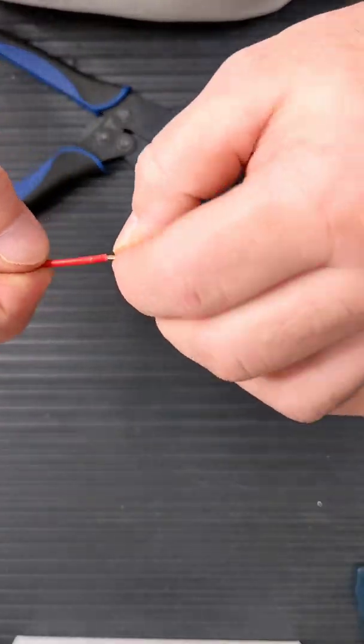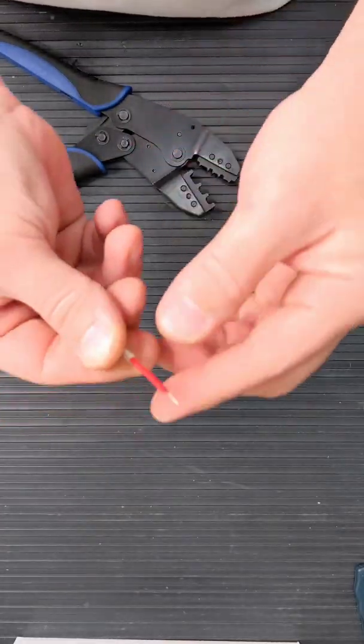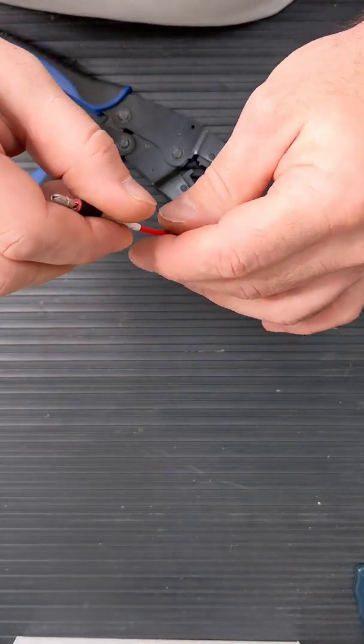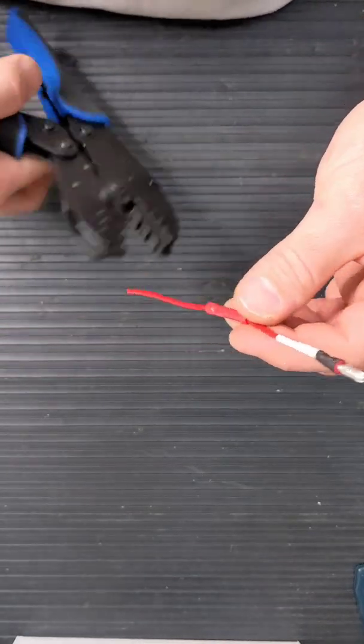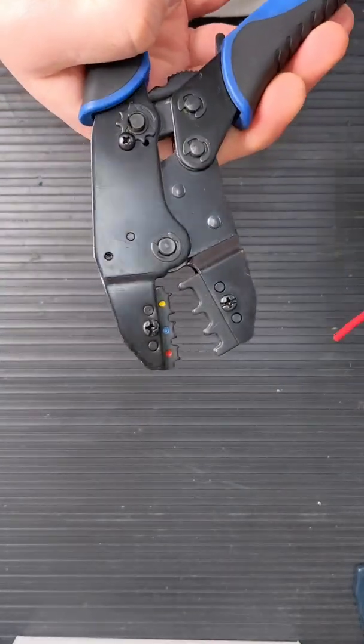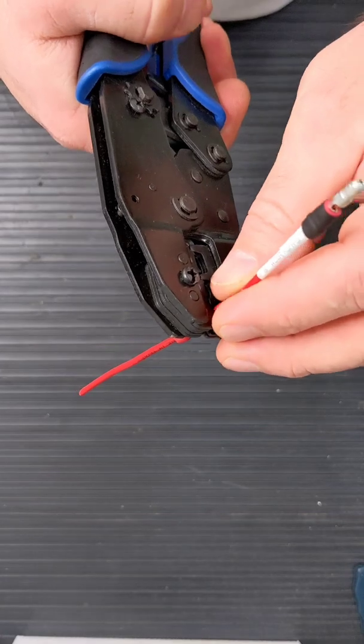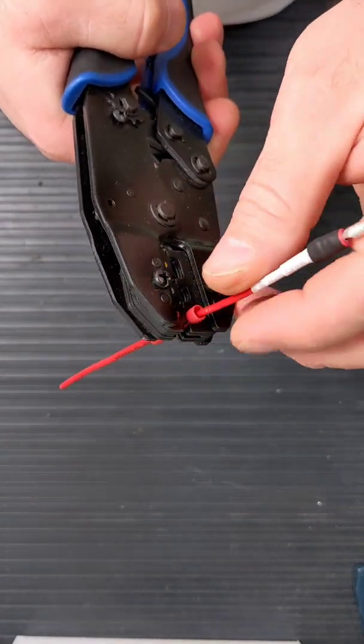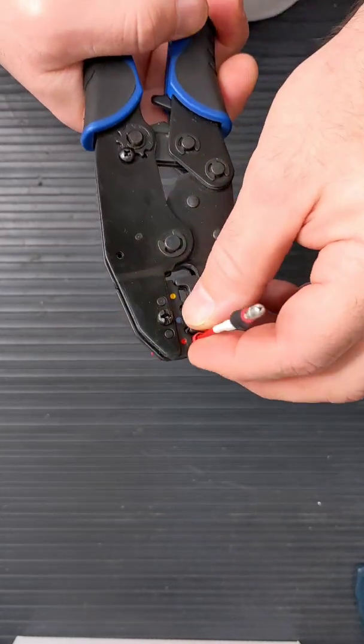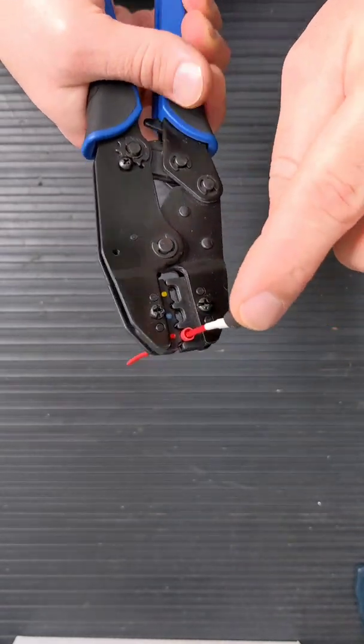You want to do the same for this side. I've already stripped a centimeter off. Put that in your butt joint. Sometimes it's a little easier just to have it in the crimper already. Make sure you're using the corresponding color. Secure that down, and once it's in there, then you can push the wire in, make sure it's secure, and when you're sure it's secure, you can crimp it.